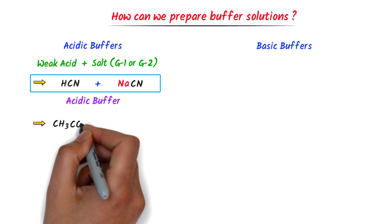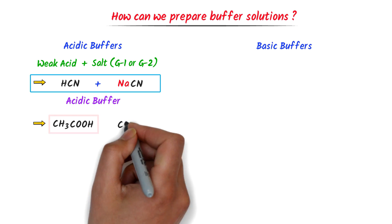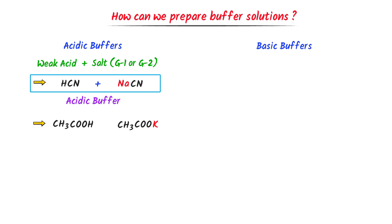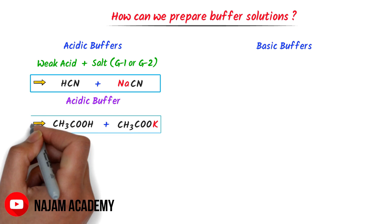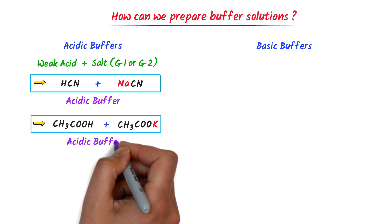Consider acetic acid. We know that acetic acid is a weak acid. Now I remove hydrogen from it and instead of hydrogen I replace it by potassium. So I get potassium acetate. A mixture of acetic acid plus potassium acetate forms an acidic buffer solution.